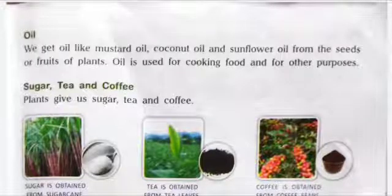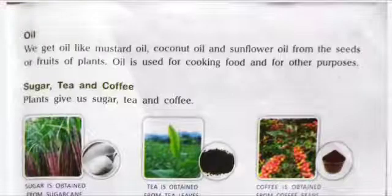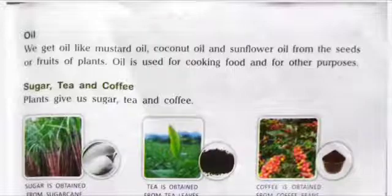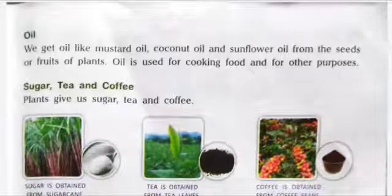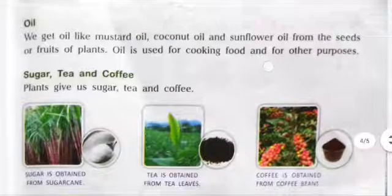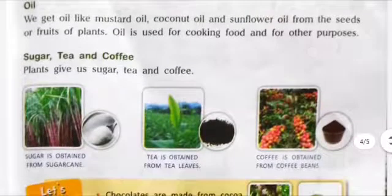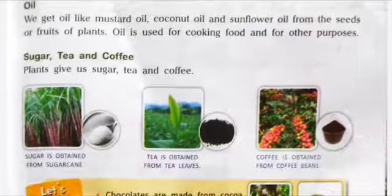We get oil like mustard oil, coconut oil, and sunflower oil from the seeds or fruits of plants. Oil is used for cooking food and for other purposes.